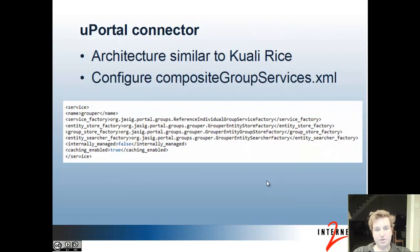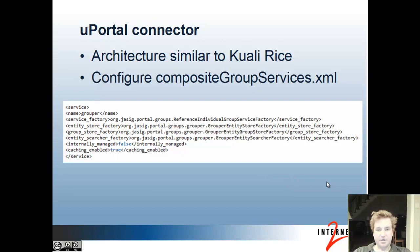The U-Portal architecture is similar to Quali-Rice, and you configure the compositegroupservices.xml file to specify the grouper connector.